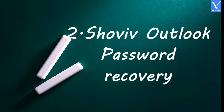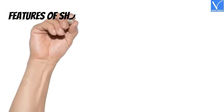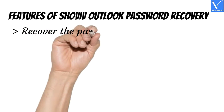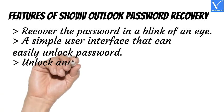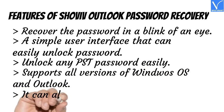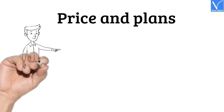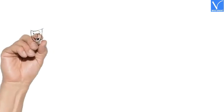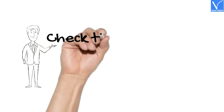Number 2: Shaveave Outlook Password Recovery. Shaveave Outlook Password Recovery is one of the best software that can instantly recover the Outlook password. You can find three different passwords using this software. Features: Recover passwords in a blink of an eye. A simple user interface that can easily unlock passwords. Unlock any PST password easily. Supports all versions of Windows OS and Outlook. Can also unlock lengthy PST files easily. Our viewers get a special discount on all Shaveave Outlook Password Recovery licenses. The product and discount links are provided in the description.